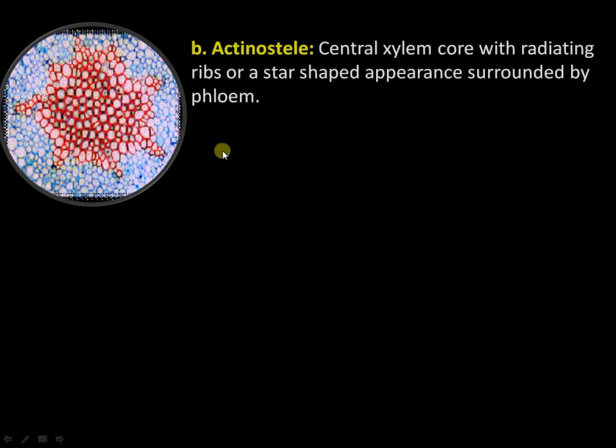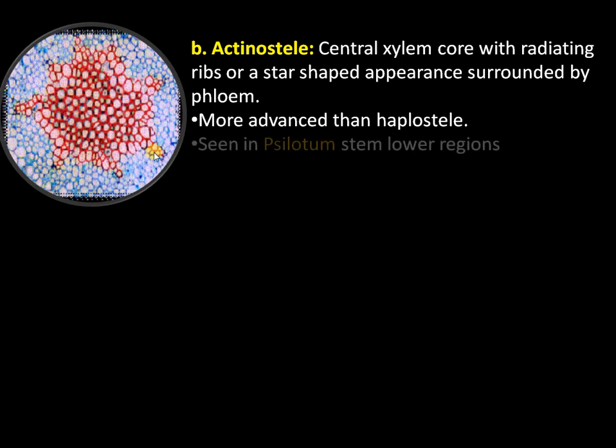The second type of protostele is the actinostele, where the xylem is star-shaped — a central core with radiating ends — surrounded by phloem. This is more advanced than the haplostele and is present in the Lycopodium stem, especially in the lower regions, with slight differences in the upper regions.